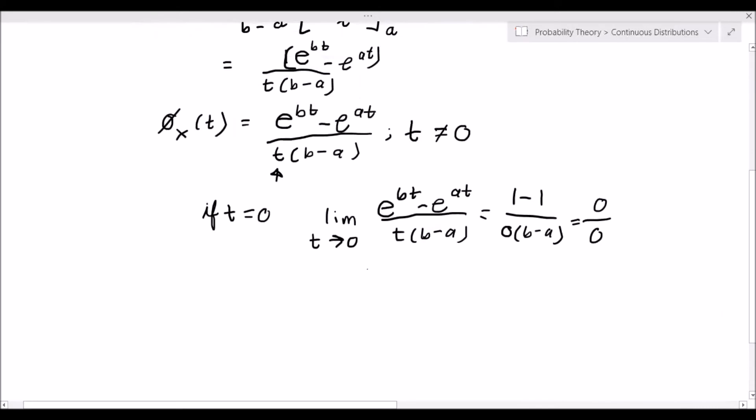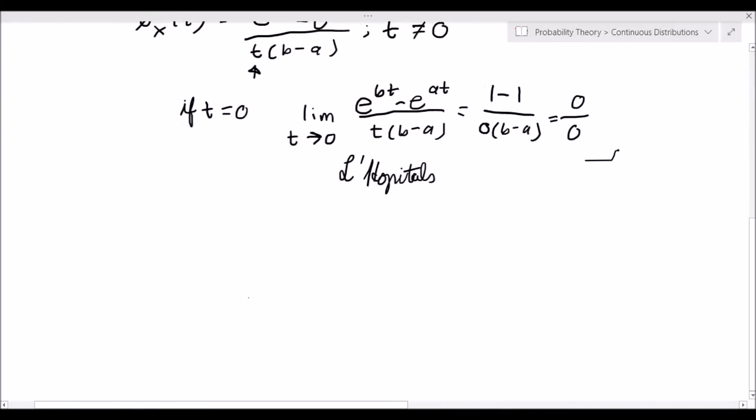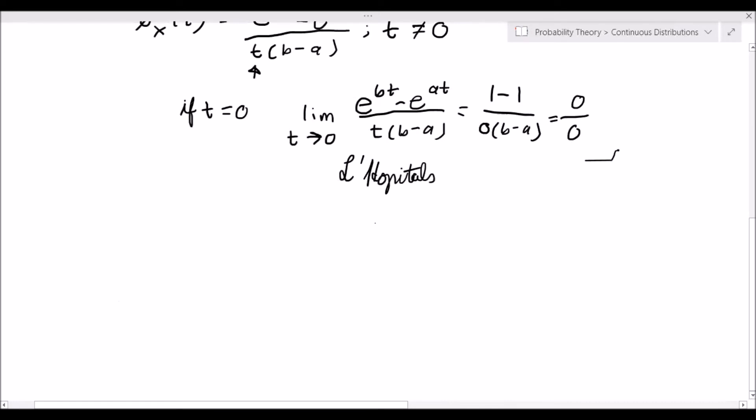We apply L'Hôpital's rule, so we take the first derivative of the numerator and denominator with respect to t. We end up with b e to the bt minus a e to the at, all divided by b minus a. We want the limit as t goes to zero of this fraction. This becomes b times 1 minus a times 1 all over b minus a, and we can see this equals 1.